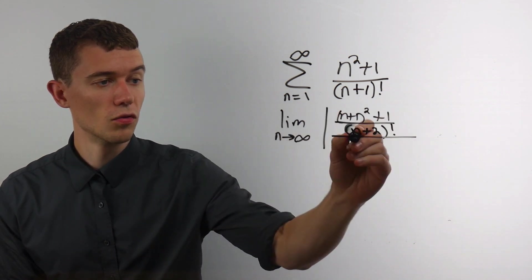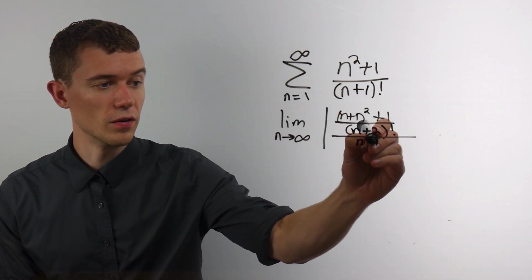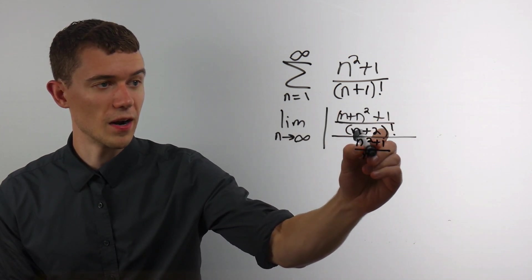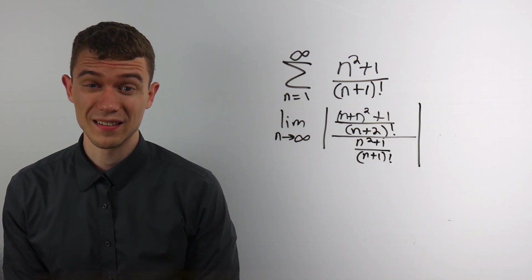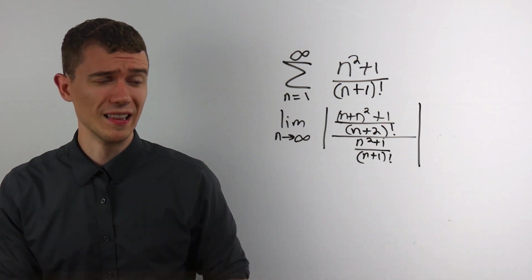And then it's all over a sub n. It's all over the original. So that's where my big fraction goes. The absolute value of that. So now we just have to compute this limit.